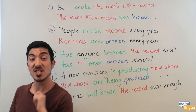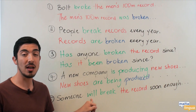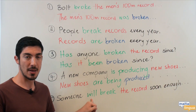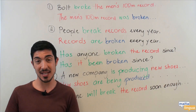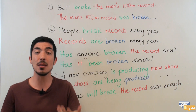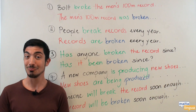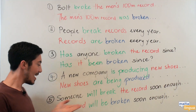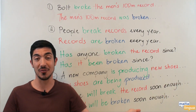The last one is a future form — the will future. Can you remember how we expressed this active sentence in the passive earlier in the video? The answer was: 'The record will be broken again.' So: 'The record will be broken soon enough.'